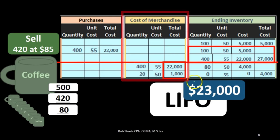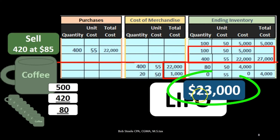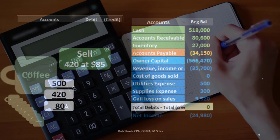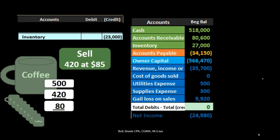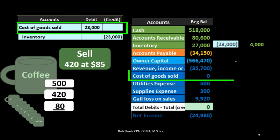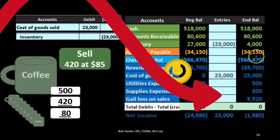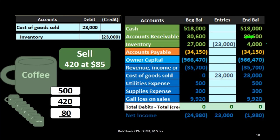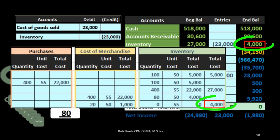After the cost of goods sold journal entry of $23,000, we are left with $4,000 in ending inventory on the trial balance. For the second half of the journal entry, inventory is credited by $23,000, bringing it down from $27,000 to $4,000, and cost of goods sold is debited by $23,000, increasing it and bringing down net income. The $4,000 remaining matches our inventory worksheet.